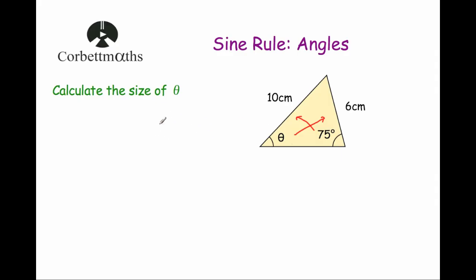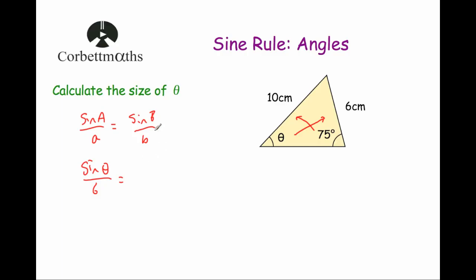So let's substitute those into the formula. The formula is sine A over a equals sine B over b. So we've got sine theta over the length of the side opposite it — that's over 6 — is equal to sine 75 degrees divided by the length of the side opposite, so divided by 10.